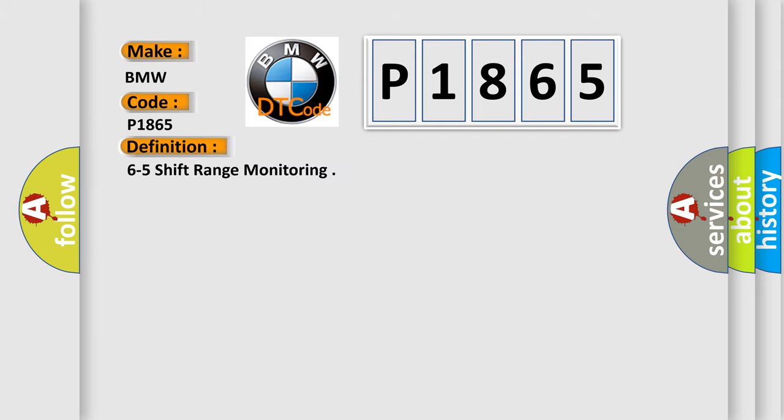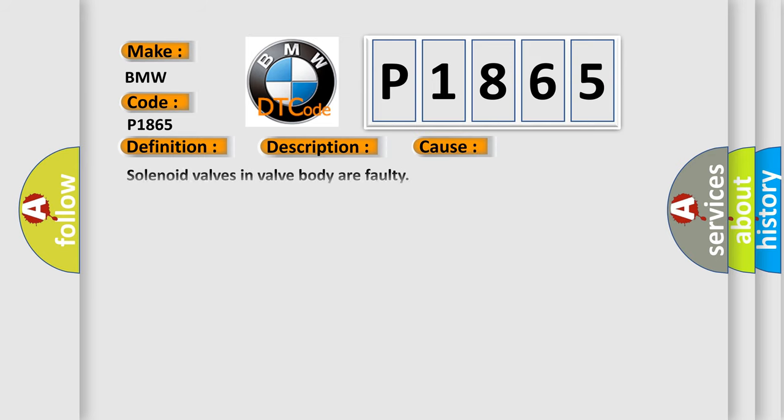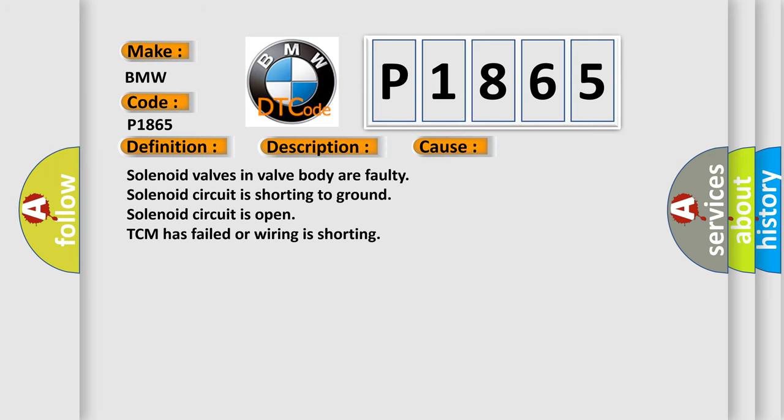The basic definition is 6 to 5 shift range monitoring. This is a short description of this DTC code: engine running and vehicle driven, the DME detected a mechanical malfunction within the transmission. The output speed is greater than 300 revolutions per minute. The transmission oil temperature is greater than 0 degrees Celsius. The engine speed is greater than or equal to 600 RPM. This diagnostic error occurs most often in these cases.